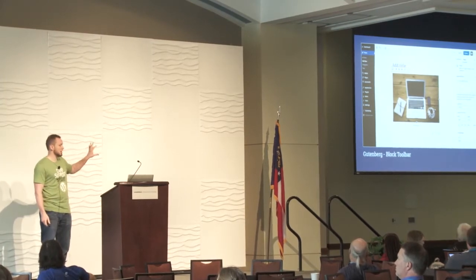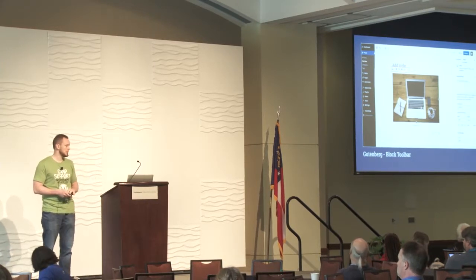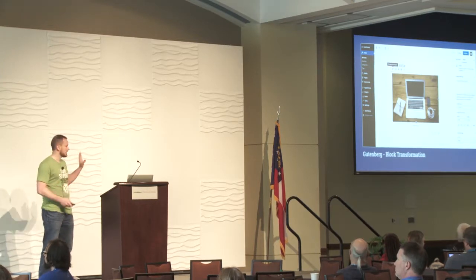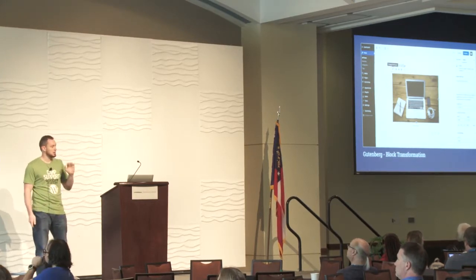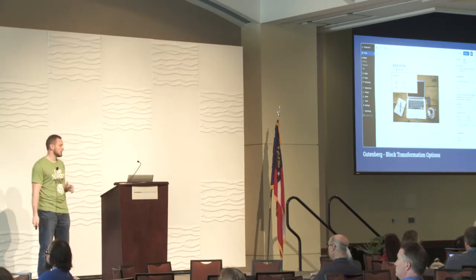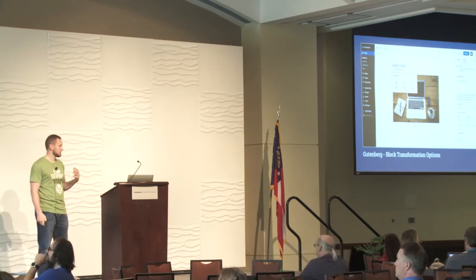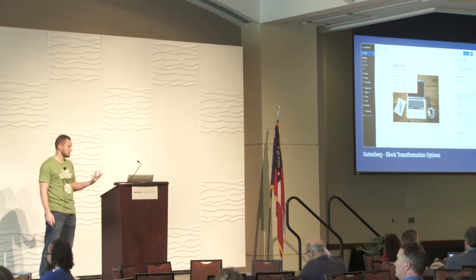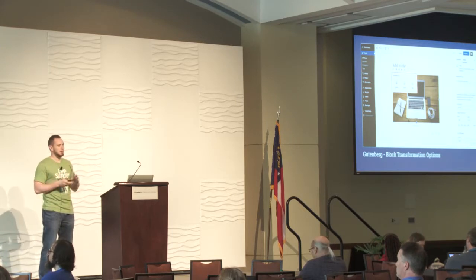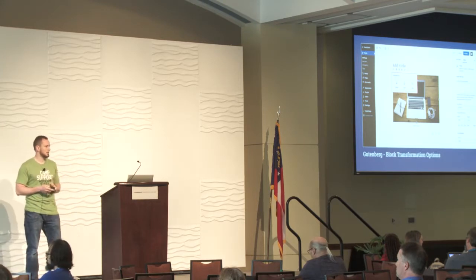We also have the block toolbar at the top — any block you click on is going to have a toolbar with some actions you can take. One of the coolest ones that can often be overlooked is the block transformation icon. When you click on that, whatever type of block you have — say an image — it'll pop open your options for converting that block to something else. In this case we can convert the image to a gallery, a cover image, or even just a file, giving different ways to render or add to it.